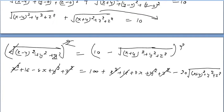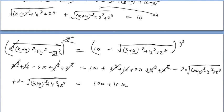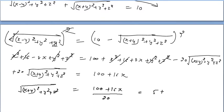After cancellation, take all terms to one side and leave the root on the other side. We get 20√[(x+4)² + y² + z²] = 100 + 16x. Dividing by 20: √[(x+4)² + y² + z²] = 5 + (4/5)x.